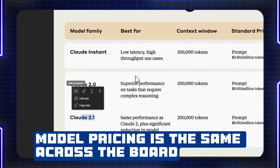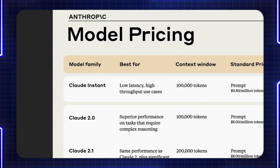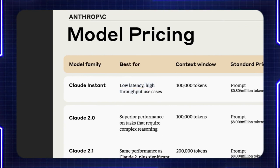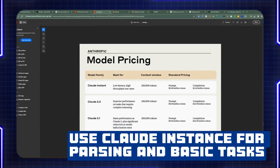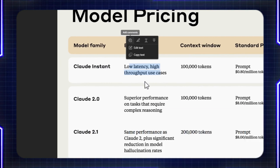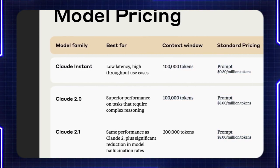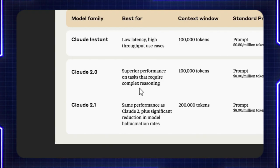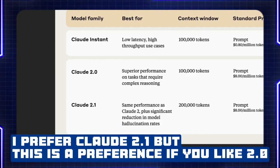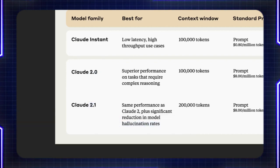The only thing that's different between the models is the context window, since models are trained differently. Cloud Instant is designed for high-throughput use cases — when you want fast output from Cloud AI. Cloud Instant would be something to consider since the context window is the same as 2.0. But if you want something better for reasoning on more complex tasks, then either 2.0 or 2.1 would be a better fit.